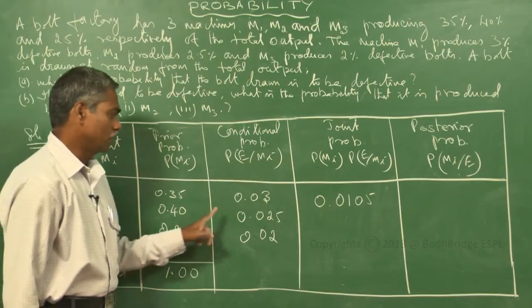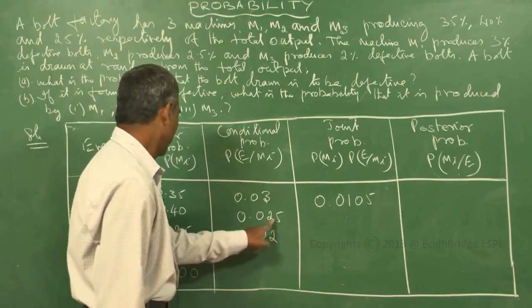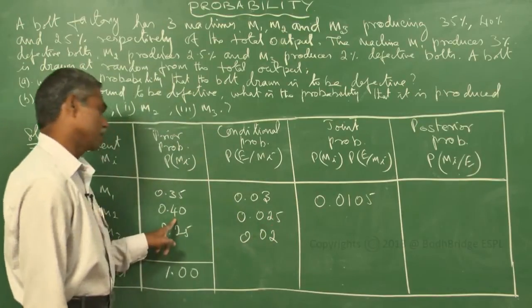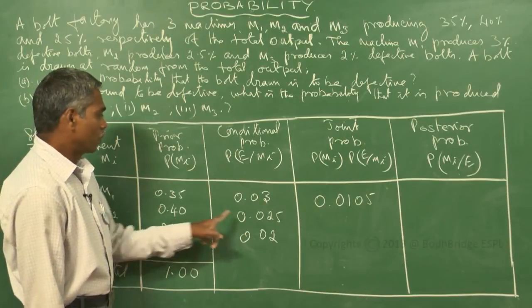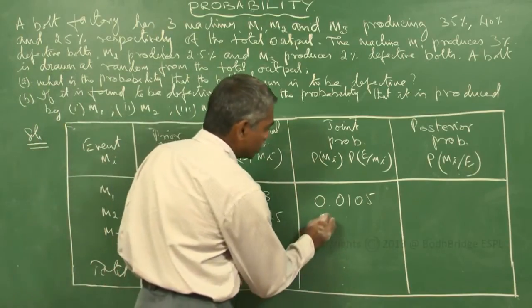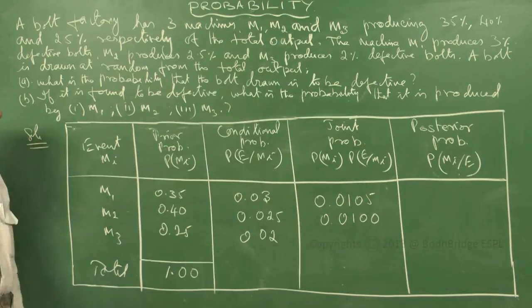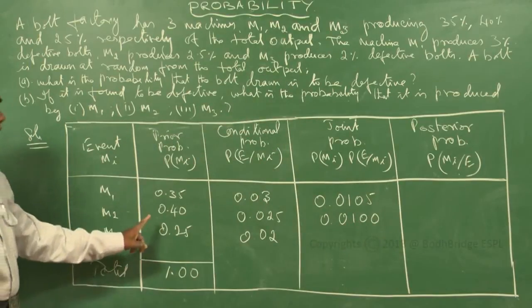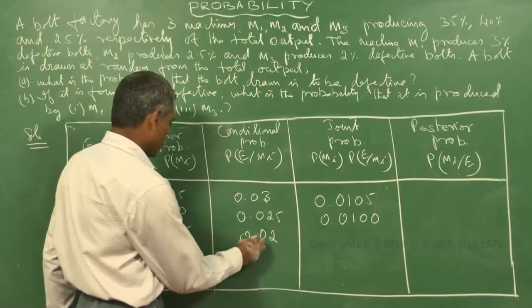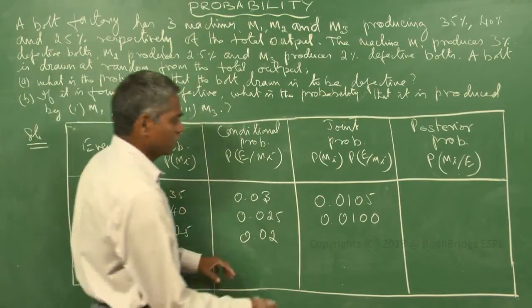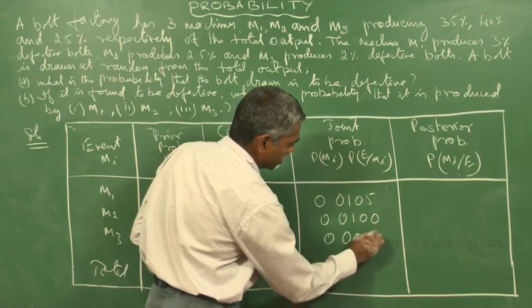For M2: 0.40 × 0.025 = 0.0100. For M3: 0.25 × 0.02 = 0.0050.